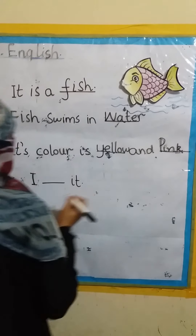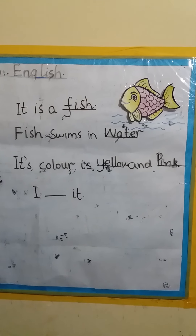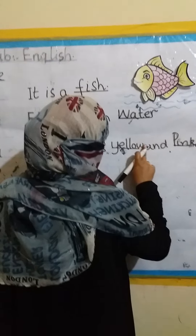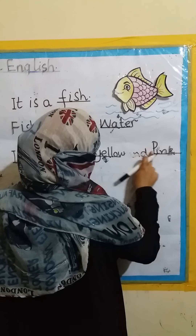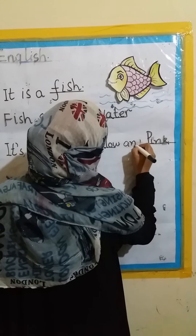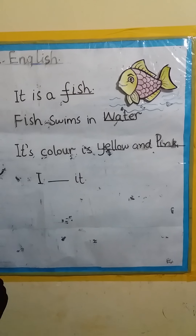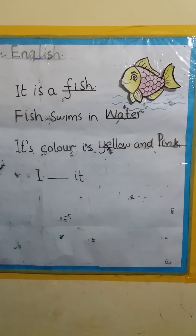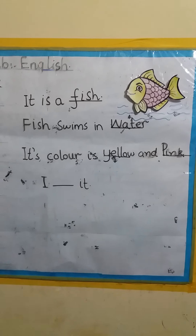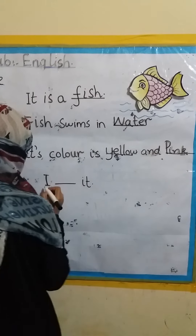The color of fish is yellow and pink. The color of fish is yellow and pink. You like it? You like this fish? Yes, very sweet, cute fish!